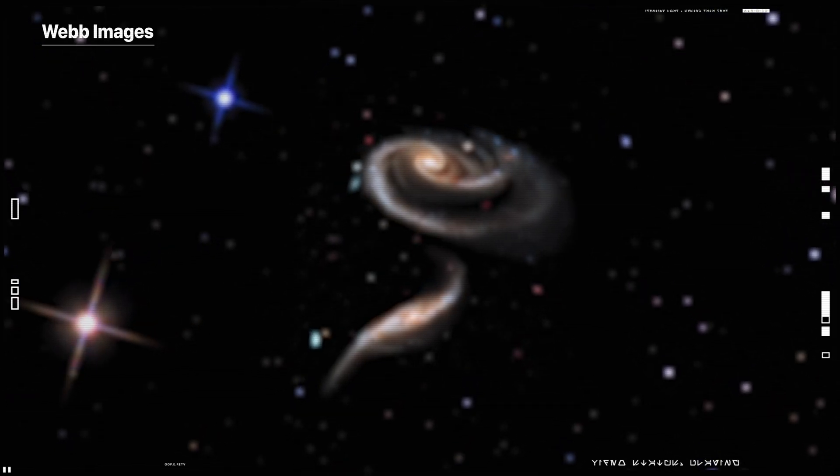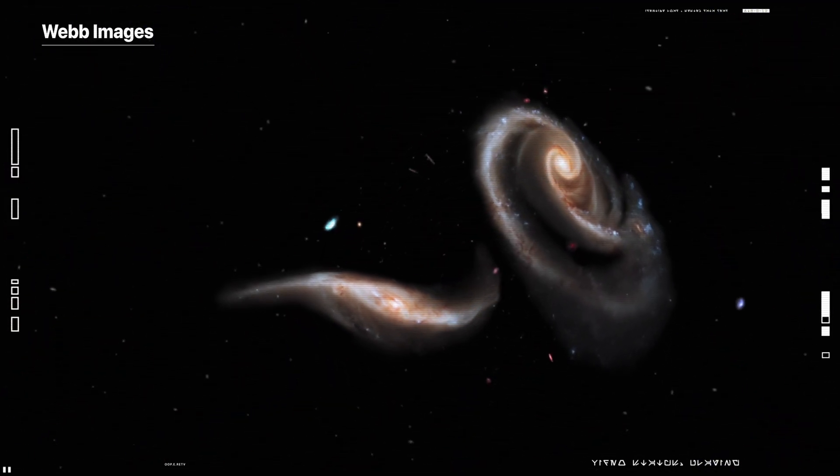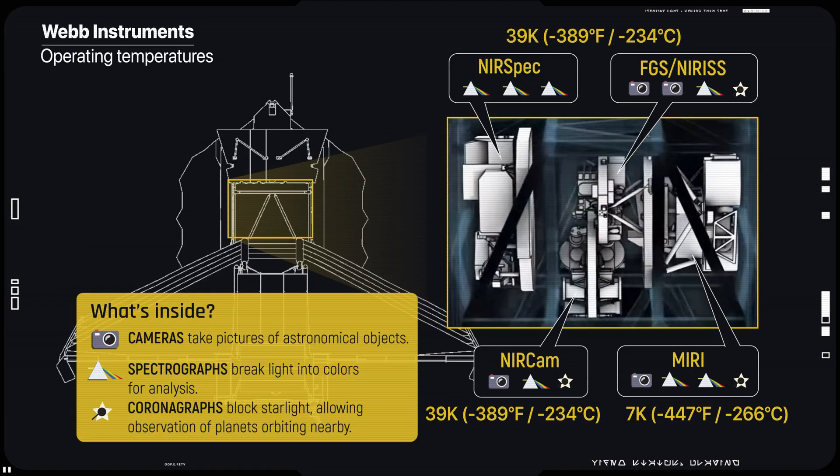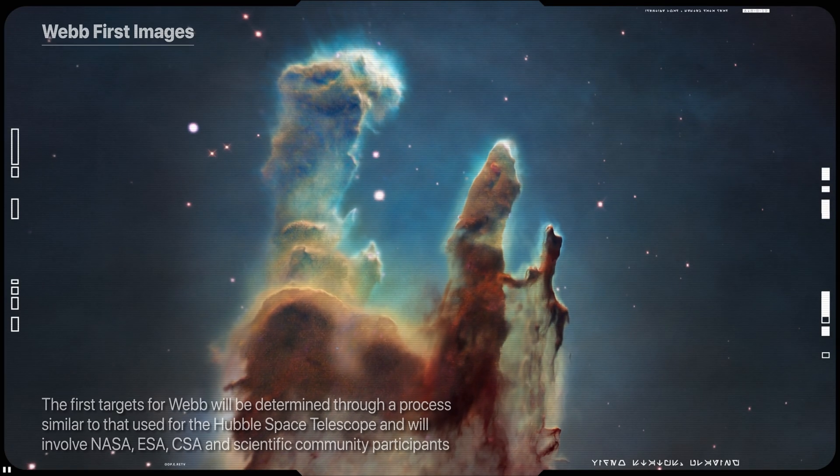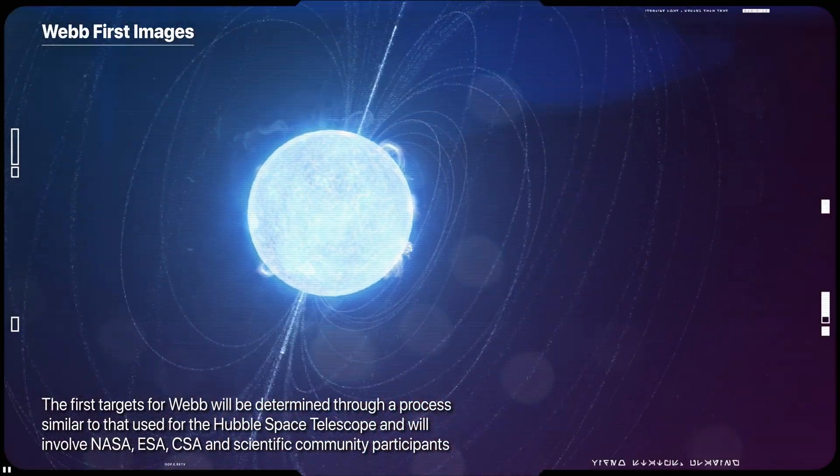Moving forward, Webb's images will only become more clear, more detailed and more intricate as its other instruments arrive at their intended cryogenic operating temperatures and begin capturing data. The first scientific images are expected to be delivered to the world in this summer in June or July.